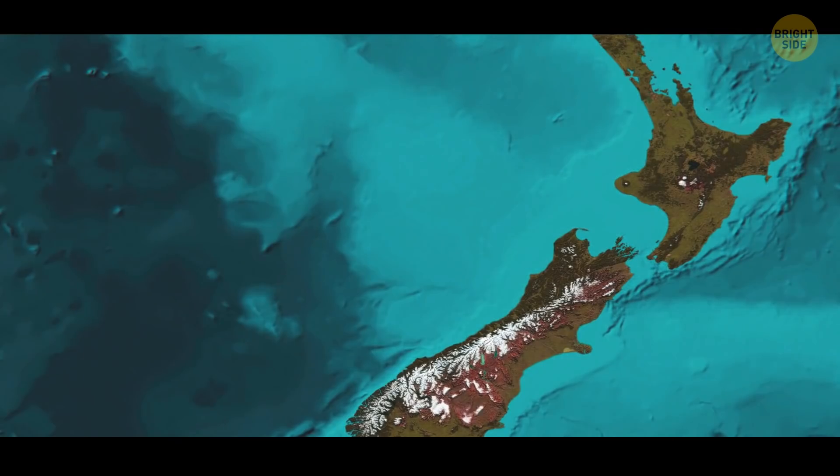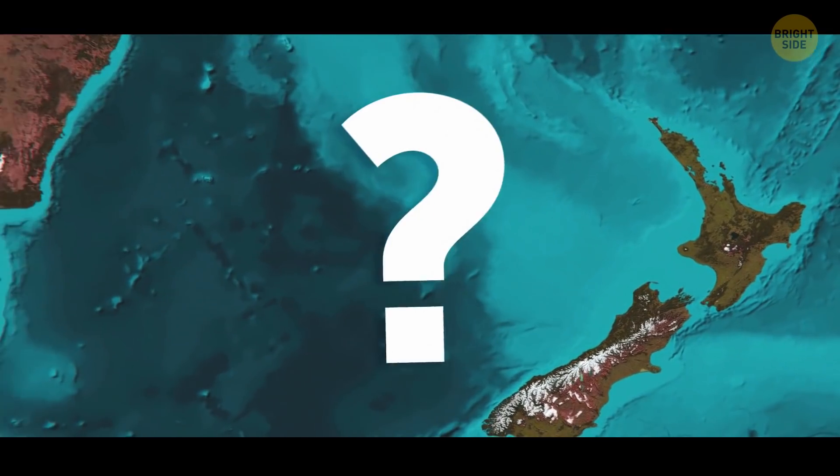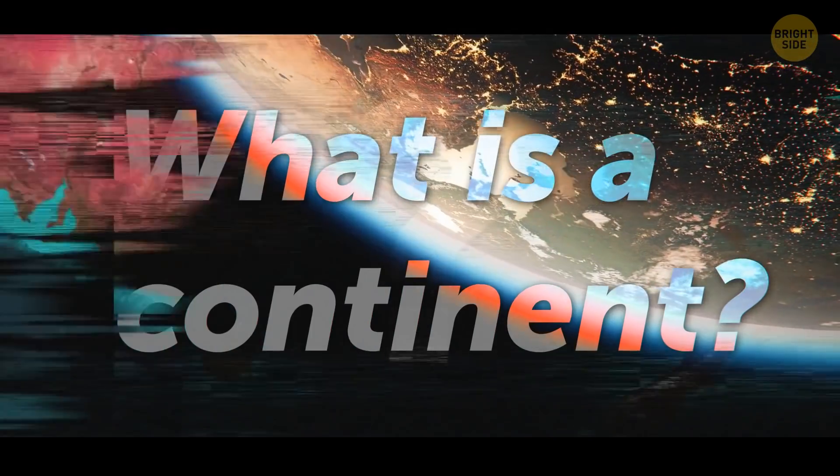Those peaks are the islands. Zealandia is categorized as a microcontinent, which then begs the question, what is a continent anyway?